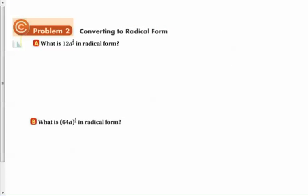Alright, let's look at problem number 2. Converting to radical form. So what is 12a to the 2/3 power in radical form? Well, this is 12 times a to the 2/3 power. So what you do here is you just say, well that's 12 times the cube root of a squared.